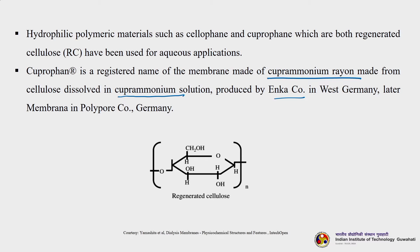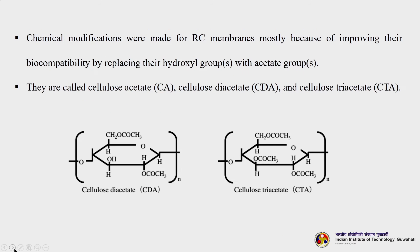Chemical modifications were made to regenerated cellulose membranes, mainly to improve biocompatibility by replacing hydroxyl groups with acetate groups. These are called cellulose acetate (CA), cellulose diacetate (CDA), or cellulose triacetate (CTA).